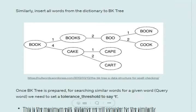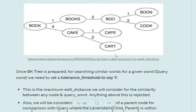Let's pick another example — 'cook'. We first calculate the Levenshtein distance with 'book', which equals 1. As the child already exists, we calculate the Levenshtein distance with 'books', which equals 2. 'Boo' already exists with Levenshtein distance 2. We slide down again and calculate the Levenshtein distance with 'boo', which equals 2. As 'boo' doesn't have a child with Levenshtein distance 2, 'cook' becomes its child. This is how the BK Tree is created.